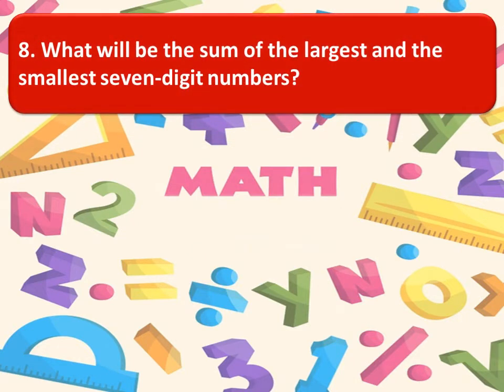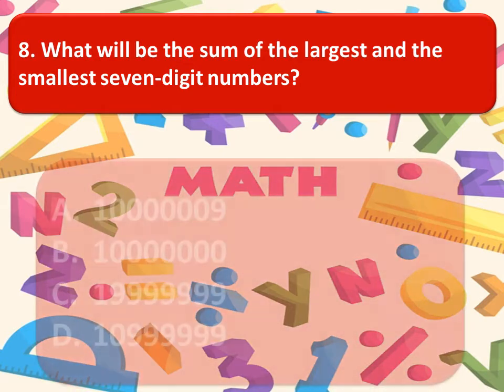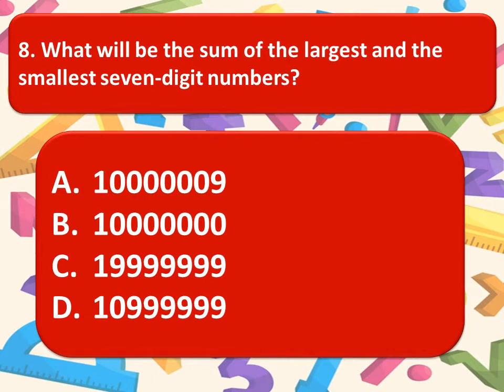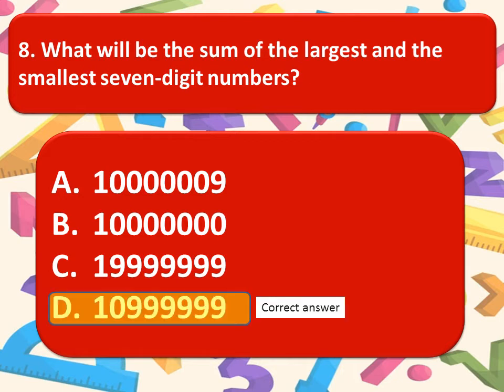What will be the sum of the largest and the smallest seven digit numbers? Here are the options. Think about the correct option. You can pause the video to think about the correct option. And the correct option is option D. 1 crore 9,99,999.